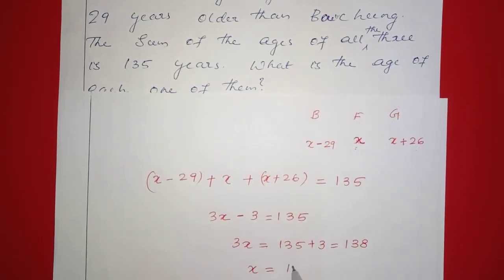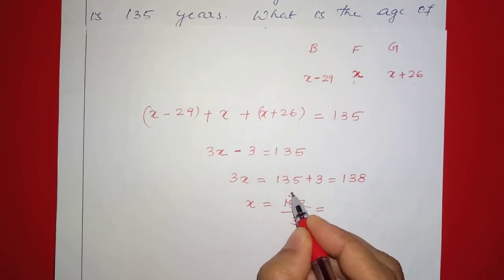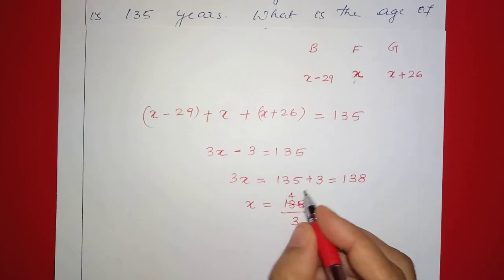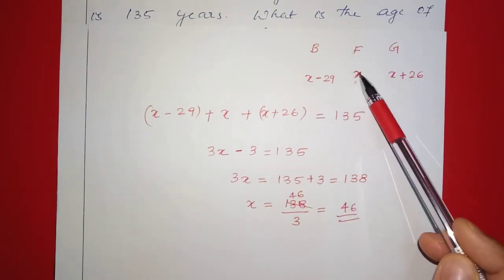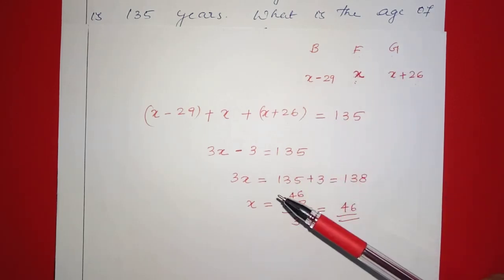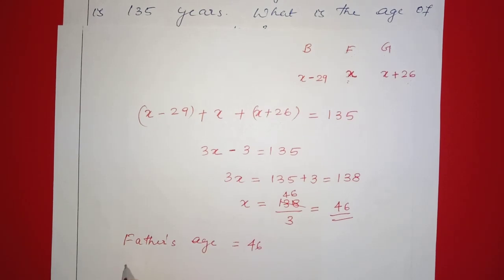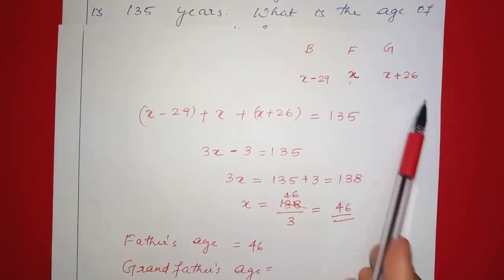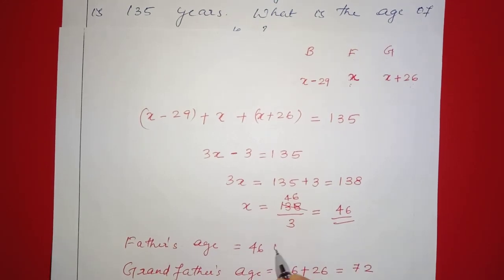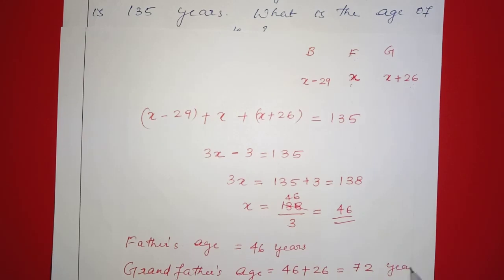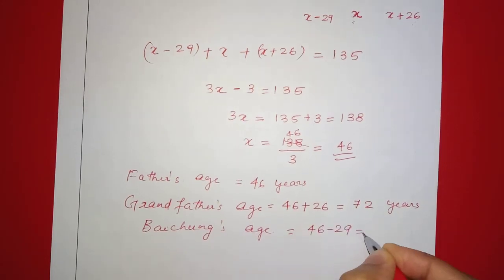So x equals 138 divided by 3, which is 46. Let x be the age of the father. Father's age is 46. Grandfather's age is x plus 26, that is 46 plus 26, which equals 72. Pejong's age is x minus 29, that is 46 minus 29, which equals 17 years.